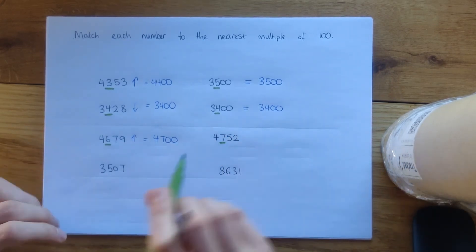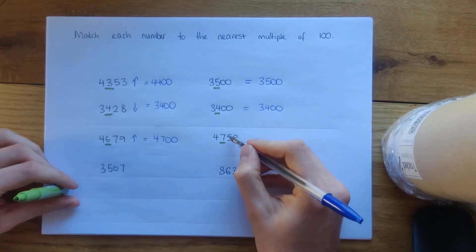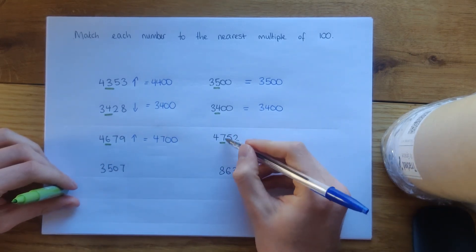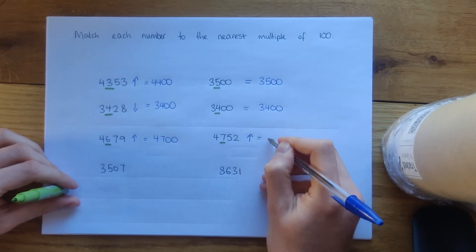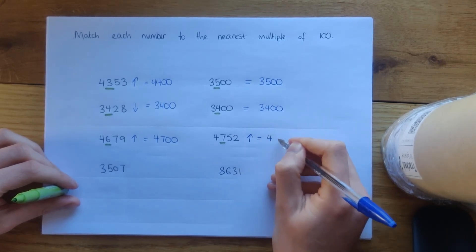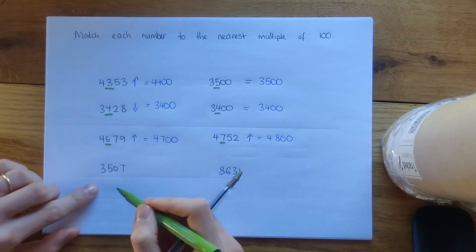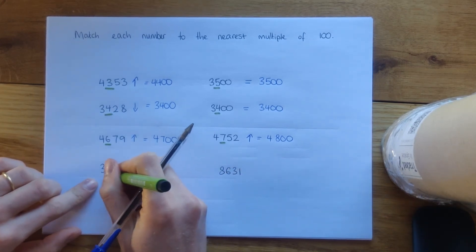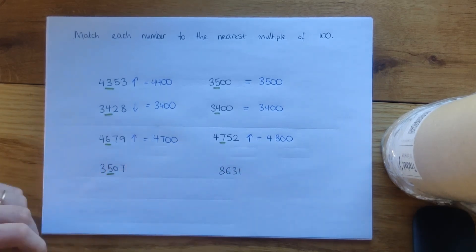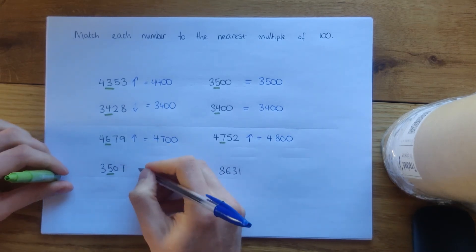4,752 — is it going to go up to 4,800 or stay as it is? We're past that 50, we're past that halfway point, so it's going to get rounded up to the next hundred: 4,800.